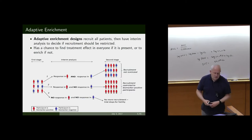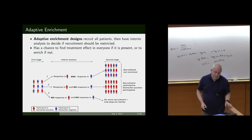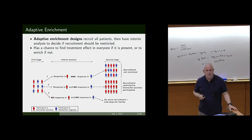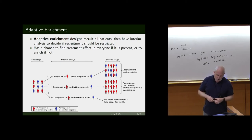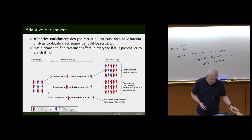Alternatively, you can do an adaptive enrichment where you're recruiting all sorts of patients — a mixture of, say, red and blue people. You take an interim analysis and decide whether there's a response in both subgroups. If there is, you go on to a second stage studying the whole population. If there isn't enough evidence of response in the blue people, you adaptively enrich. Or if there's no response at all, you stop for futility.